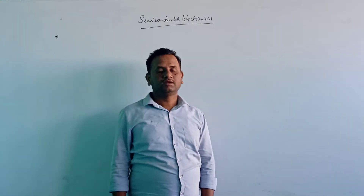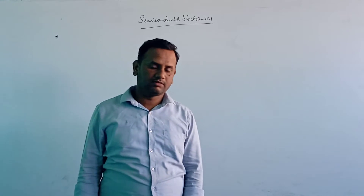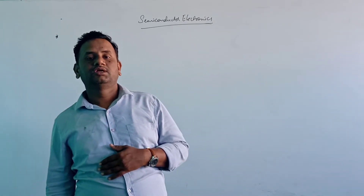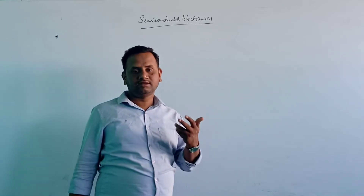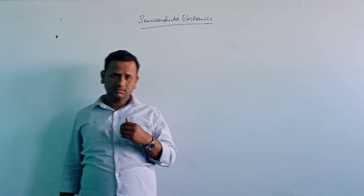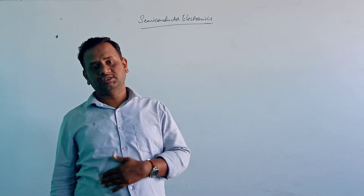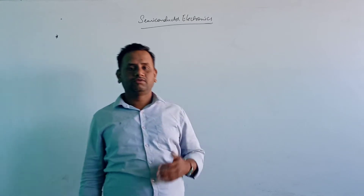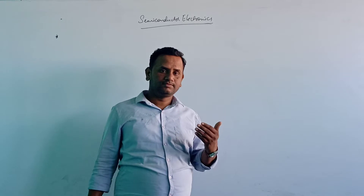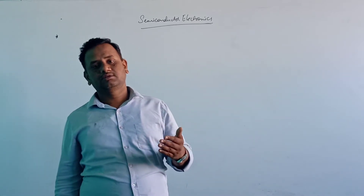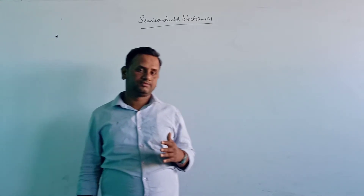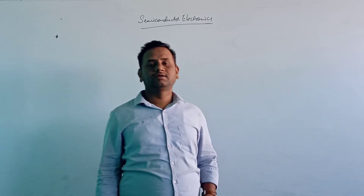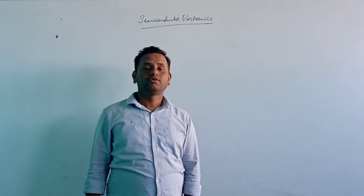Good morning students. In the last video, we already discussed the classification of materials on the basis of resistivity and conductivity. We covered three types: conductors, insulators, and semiconductors. We also discussed how the energy band is formed, along with definitions like energy gap, valence band, and conduction band. The valence band is completely filled with valence electrons, and the conduction band is completely empty. The energy gap between them is also called the forbidden gap.